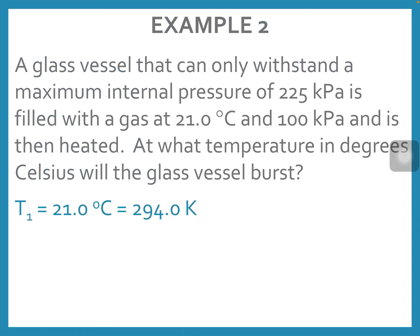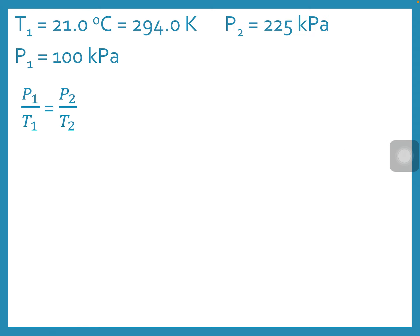So our initial temperature, 21 degrees Celsius, plus 273 is 294 Kelvin. Initial pressure is 100 kilopascals, and the pressure at which that would burst is going to be 225 kilopascals, or just above that. And so we're going to look for what temperature that would happen at. So there are all our values and formula, P1 over T1 equals P2 over T2.